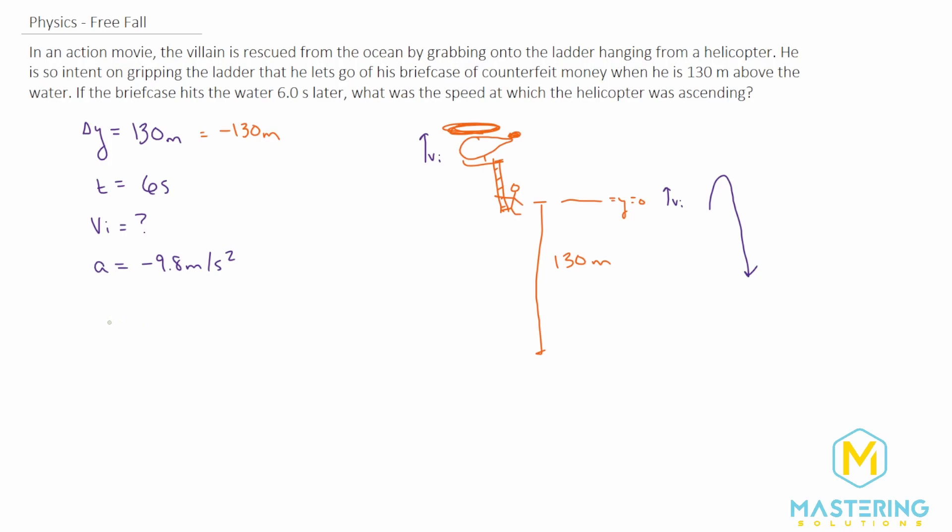The one that we'll be using is Y final equals Y initial plus velocity initial times time plus one half times acceleration times time squared. I'm going to move the Y initial over, so we'll be subtracting that over.